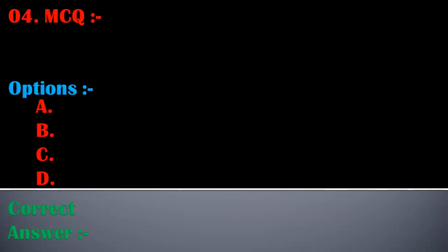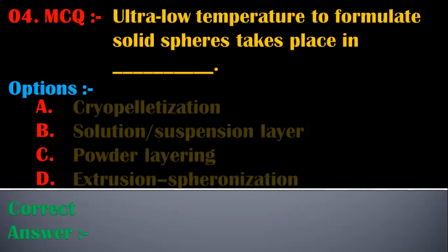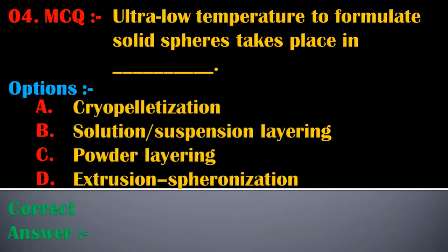Fourth MCQ: ultra low temperature to formulate the solid spheres takes place in — options are: A) cryopelletization, B) solution suspension layering, C) powder layering, D) extrusion spheronization. The correct answer is extrusion spheronization.